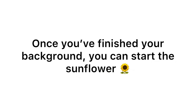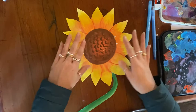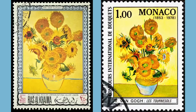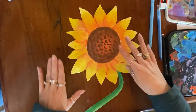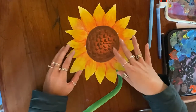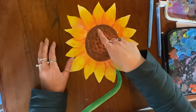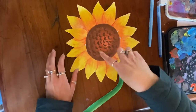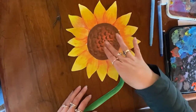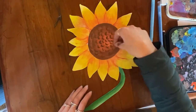Once you've finished your background, you can start the sunflower. Something that van Gogh is known for is his sunflowers — some of his sunflower pieces feature on stamps. I've done yellow with a little bit of orange, and then I've added movement and texture by flicking my paintbrush, going from dark to light. You can do your sunflower however you'd like.